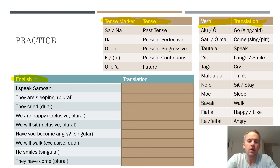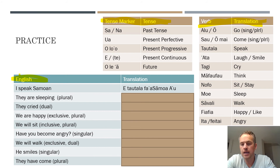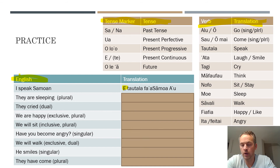The first English sentence is 'I speak Samoan.' The Samoan translation is: e tautala fa'asamoa au. We use the 'e' tense because this is a present continuous attribute — it's just something that is. Tautala is 'to speak,' fa'asamoa means 'in the Samoan way,' and au is the first person singular pronoun.